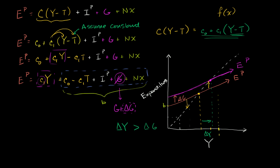In the last video, we saw how the Keynesian cross could help us visualize an increase in government spending, which was a shift in our aggregate planned expenditure line. We saw how the actual change — the actual increase in output, taking all of the assumptions from this model — meant the actual change in output and aggregate income was larger than the change in government spending.